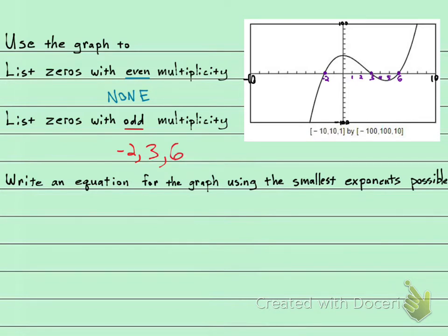Now the last question says to write an equation for the graph using the smallest exponents possible. Okay, so my equation is going to be, let's make it a function, f of x. And now remember, if these are the zeros, they all come from factors. So the factor that I would have here is x plus 2. The factor that I would have here is x minus 3. And the factor that I would have here is x minus 6.